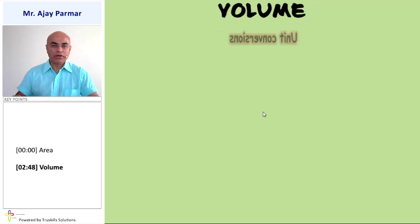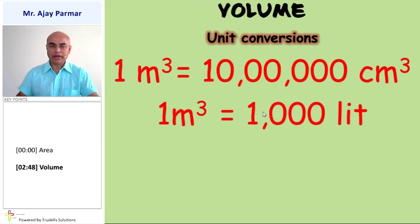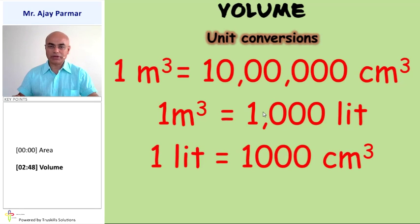Volume. Some unit conversions again for volume are to be remembered. 1 meter cube is equal to 10 lakh centimeter cube. Whereas 1 meter cube when converted into liters will be equal to 1000 liter. The reverse way, 1 liter is equal to 1 upon 1000 meter cube. And 1 liter is equal to 1000 centimeter cube. The reverse way, 1 centimeter cube will be equal to 1 upon 1000 liter.